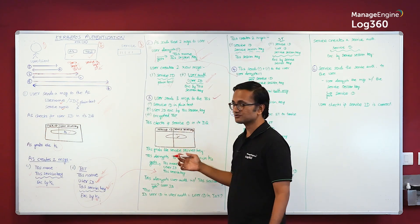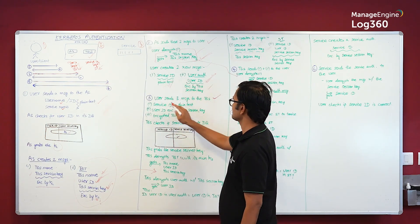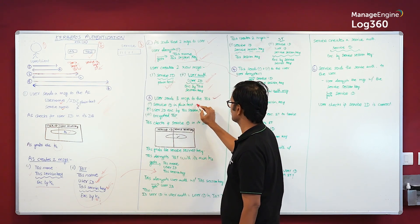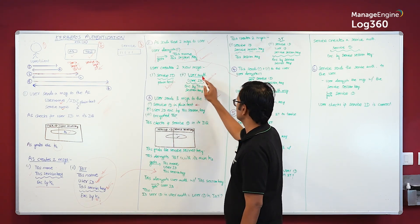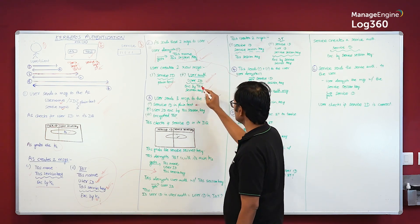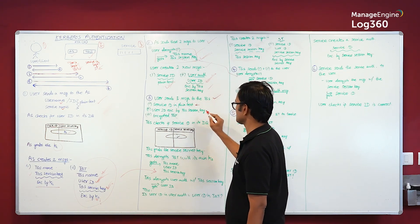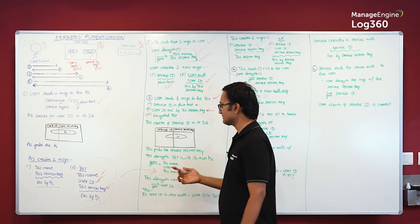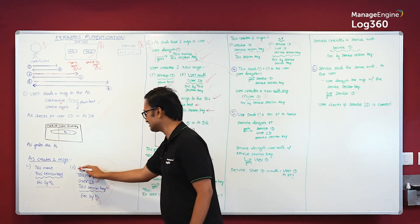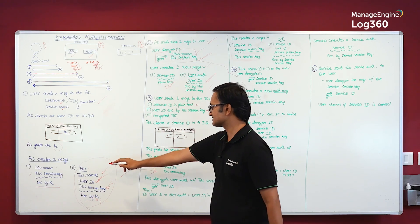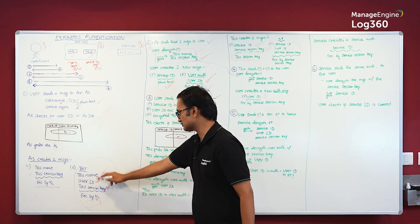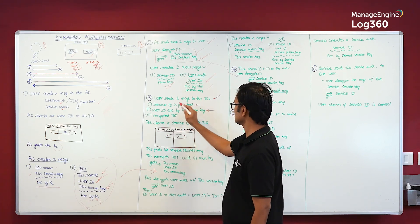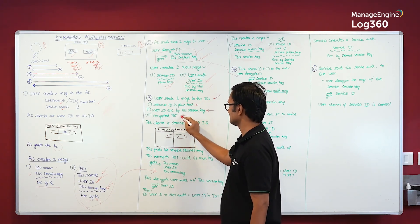The three messages sent to the TGS (step three) are: the Service ID in plain text, the user authenticator (user ID encrypted by the TGS session key), and the encrypted TGT.